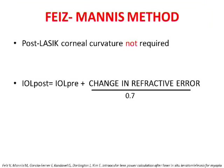The next method is the Feiz-Mannis method. This is very important because you do not require your post-LASIK corneal curvature at all. It calculates the ideal IOL power pre-operatively using your initial K values and uses the change in refractive error in its formula. You just feed in whatever data you have and it gives you the IOL power to use.